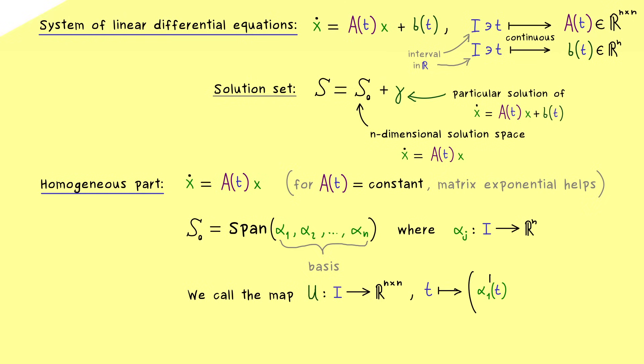As already mentioned, the columns of this matrix should have the solutions αⱼ. So the first column is just α₁, the second α₂, and so on. So this is our square matrix, nicely defined for every point t in the interval.